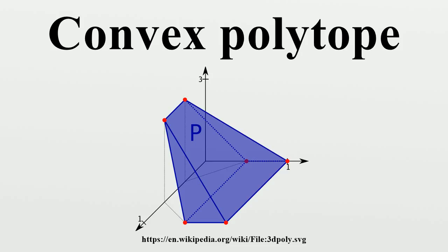Intersection of half-spaces: A convex polytope may be defined as an intersection of a finite number of half-spaces. Such definition is called a half-space representation. There exist infinitely many H descriptions of a convex polytope.